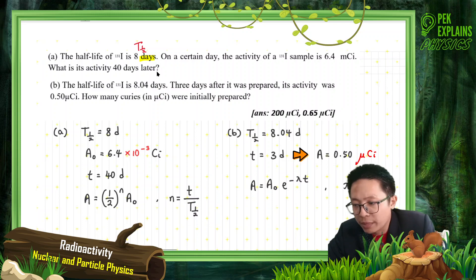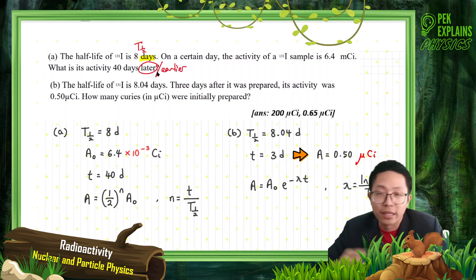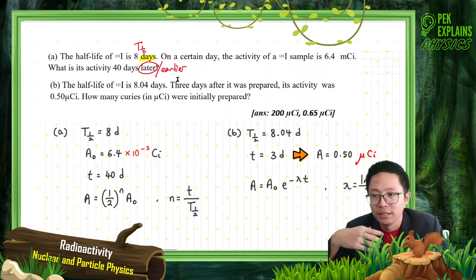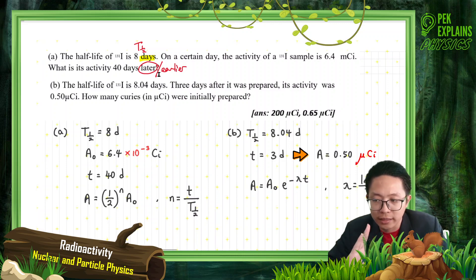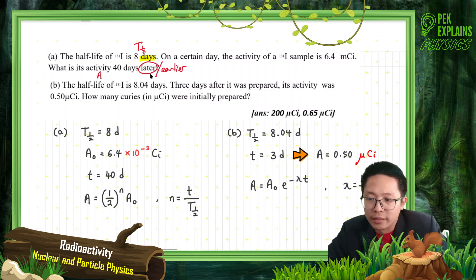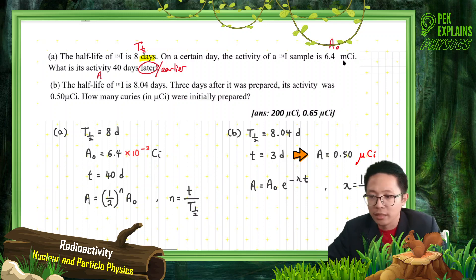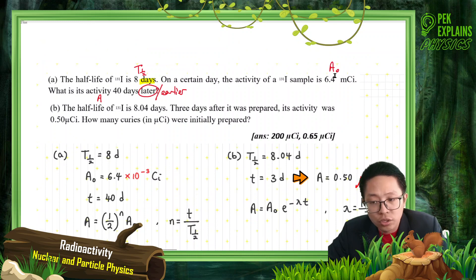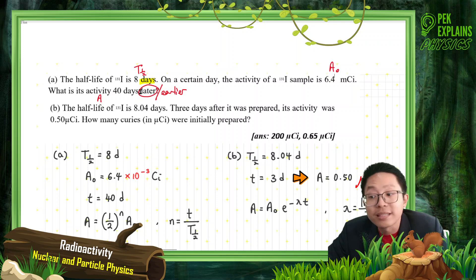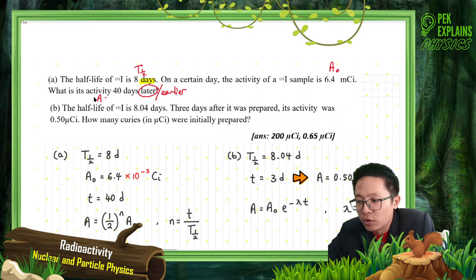You need to pay attention: is it later or earlier? Sometimes the question asks for activity 40 days earlier. If earlier, and if 40 days later — if 40 days later, that means he is asking for A, and the activity given here is A₀. This is the initial activity, and 40 days later is the final activity. So the question will ask for final activity.